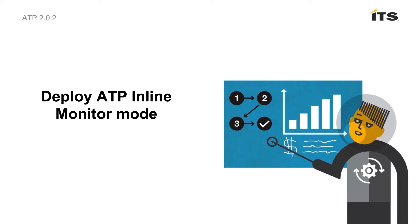In Inline Monitor Mode, network traffic passes through the appliance between the endpoints and the internet. Malicious files, websites, and traffic are logged for visibility but are not blocked. Any threats found in Inline Monitor Mode must be mitigated manually. This mode is often used as a test for system performance and to analyze potential blocking behavior before blocking is implemented. The physical connection for inline block and inline monitor mode are identical, so no recabling is necessary when switching between these modes.